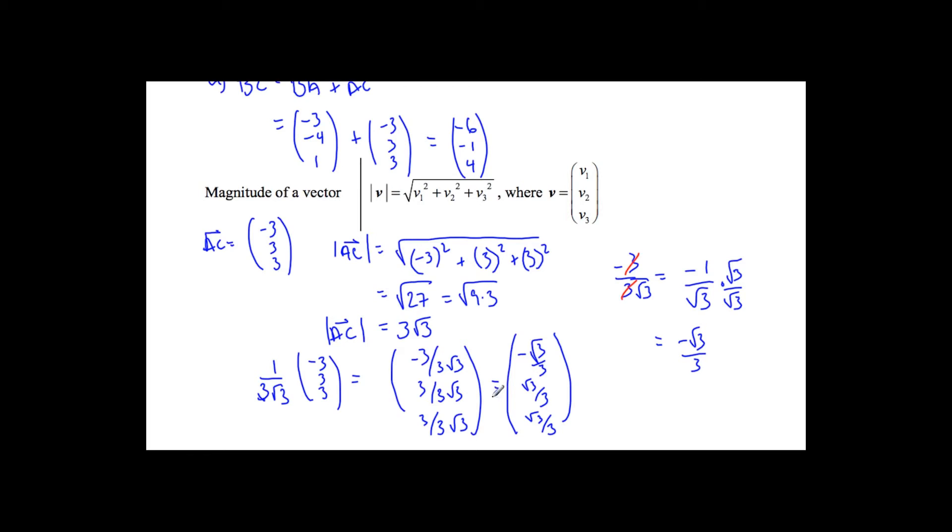That's my B part, the magnitude of the vector, and I get my unit vector. So this vector has a length of 1 going in the same direction as AC did.